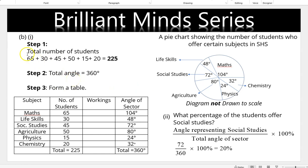This is a pie chart question. Step 1: find the total number of students, which is 225. Step 2: total angle = 360°. Step 3: complete the table. For example, Chemistry: (65/225) × 360 = 104°. For another subject: (20/225) × 360 = 32°. Every graphical representation of data must have a heading — hence: 'A pie chart showing the number of students who offer certain subjects in SHS.'